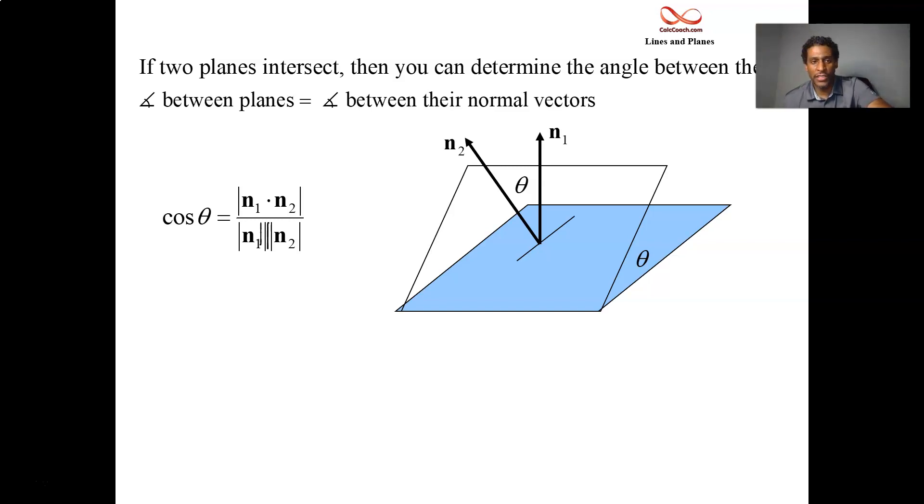We want the angle to be the acute angle. And so we're going to force the numerator to be positive by slapping absolute value bars around it. Not quite sure why those extra marks are there.